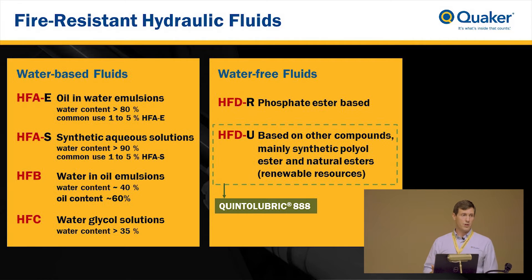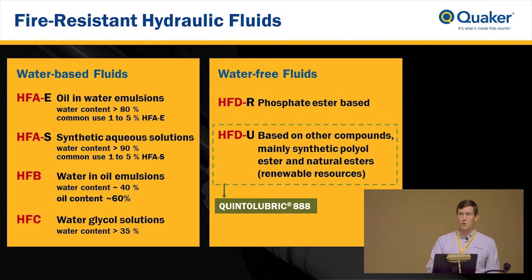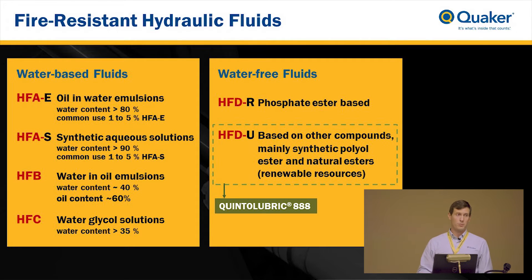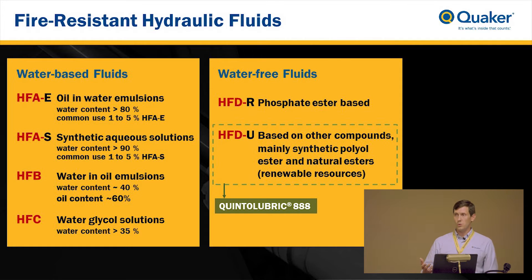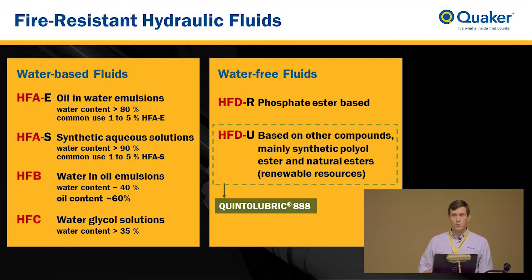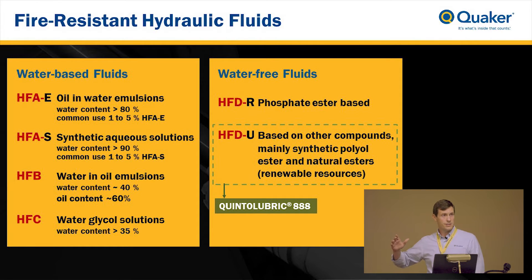HFA fluid is a regular emulsion. A lot of people call this 95-5 fluid because it's 95 percent water and 5 percent oil. The second is HFB, an invert emulsion — the opposite, about 40 percent water and 60 percent oil, putting water into the oil. HFC is a water glycol type product with about 35 to 45 percent water content. All of these on the left side are water-based hydraulic fluids, so most of the fire resistance comes from the water.